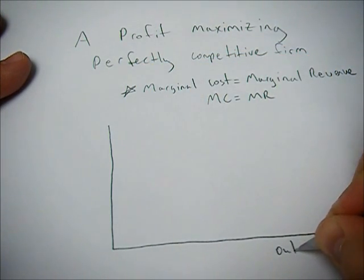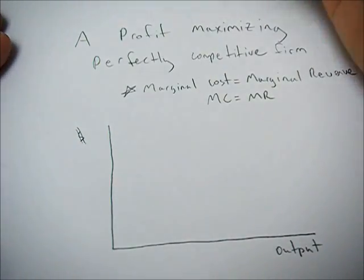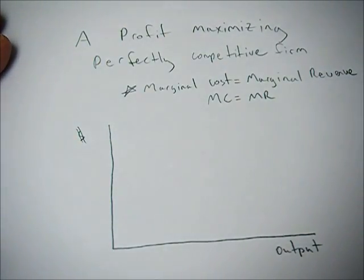Where we have output or production on the x-axis. We have dollars, price, or cost on the y-axis.